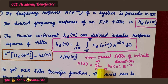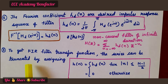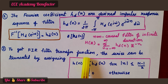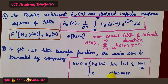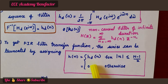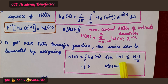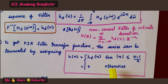So what we have to do next? The third step is to get the FIR filter transfer function: the series can be truncated. This H_d of n, which is of infinite duration, is truncated to H of n based on this formula: H of n equals H_d of n for |n| less than or equal to (N minus 1) over 2, and 0 otherwise. The filter coefficient of infinite duration is truncated to H of n based on this formula.